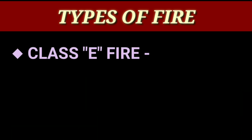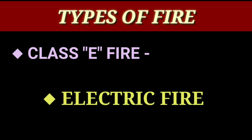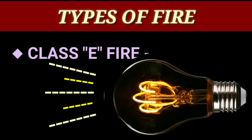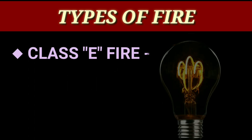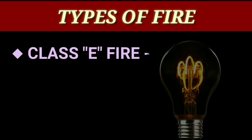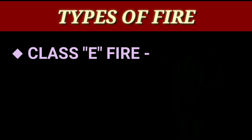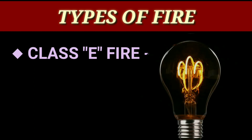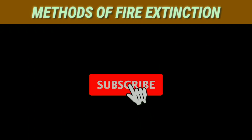Number five: Class E fire. This type of fire is also called electric fire. Fire caused due to short circuit or electrical components is included in Class E fire. To extinguish such fire, power is cut off and non-conductive fire extinguishers such as carbon dioxide are used.